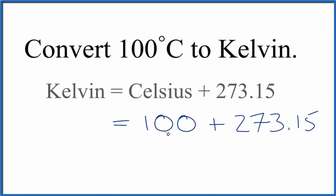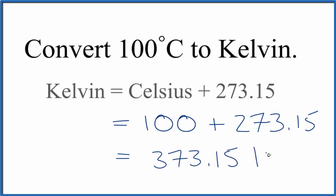So 100 plus 273.15 gives us 373.15, and then we put the K out there for Kelvin. We don't write the degree symbol, we just write K for Kelvin. So that's how you convert from 100 degrees Celsius to Kelvin.